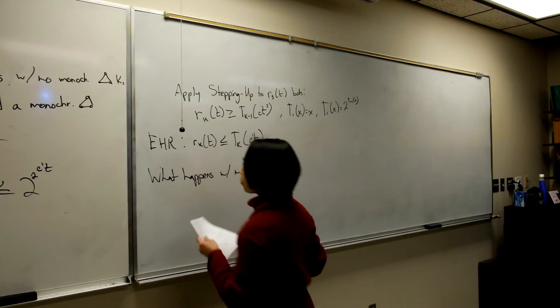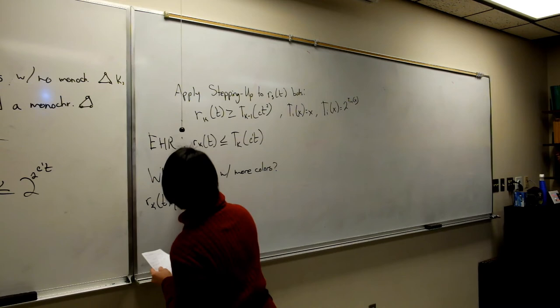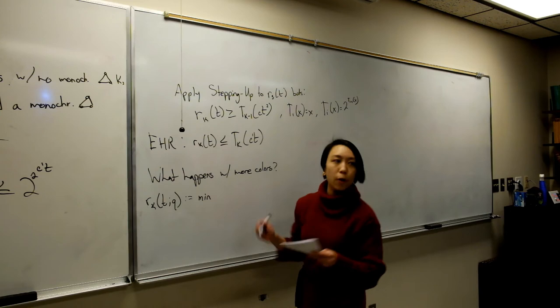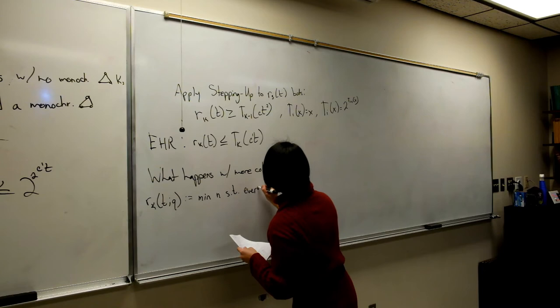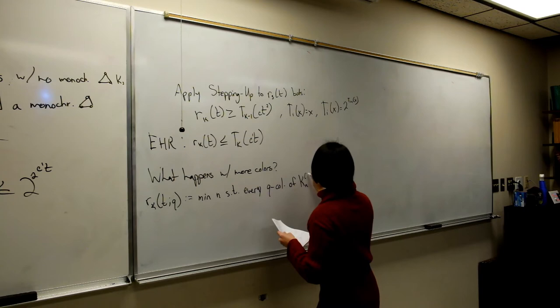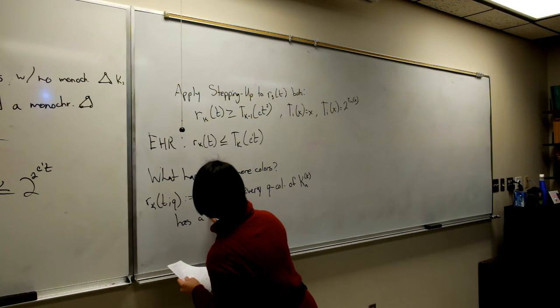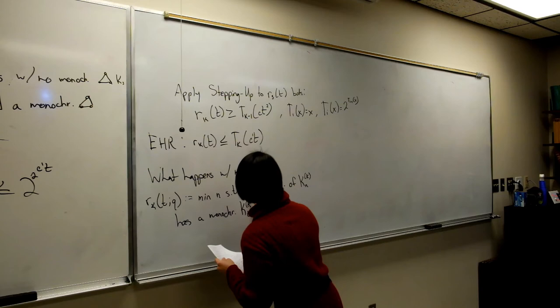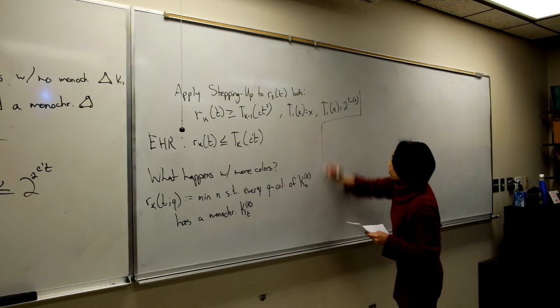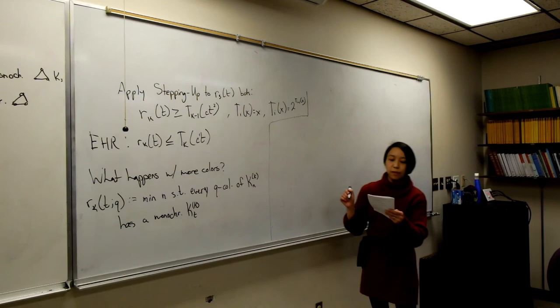I'll add a new parameter Q to the Ramsey numbers: R_K(T, Q) is the minimum N such that every Q-coloring of the complete K-uniform hypergraph has a monochromatic K_T. Erdős and Hajnal in the same 1972 paper showed that in the four-color case, we do get a double exponential lower bound — which is what we wanted in the two-color case.